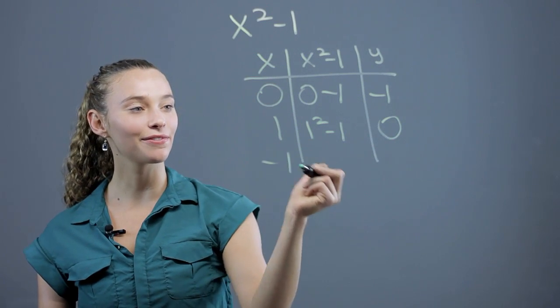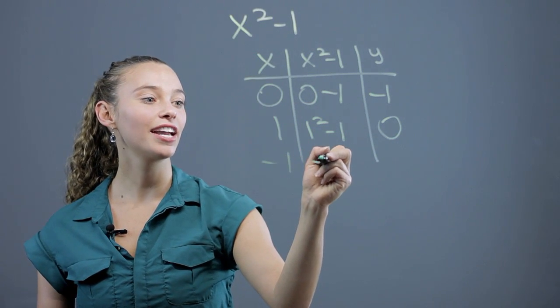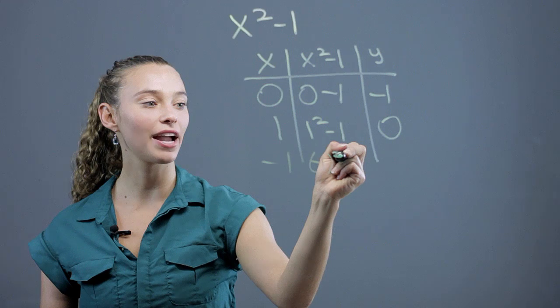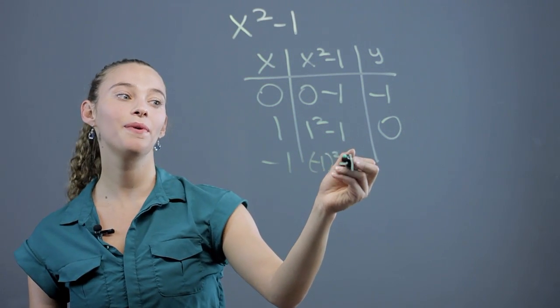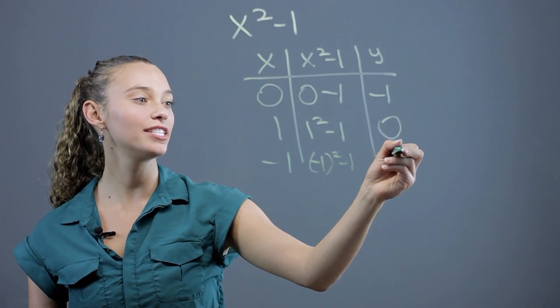Let's look at negative 1. We have negative 1 quantity squared minus 1. That's again 1 minus 1, which is 0.